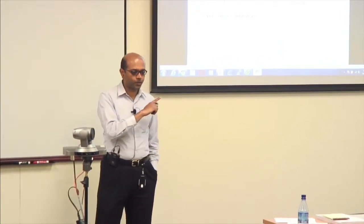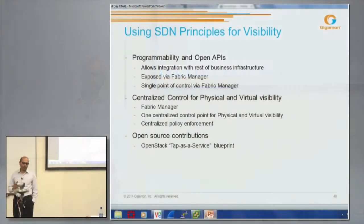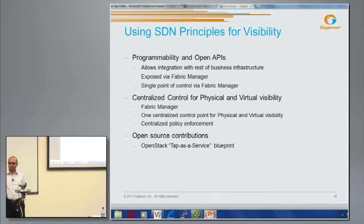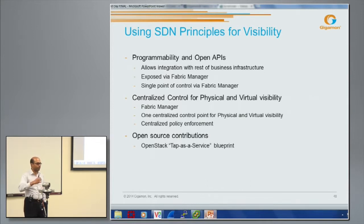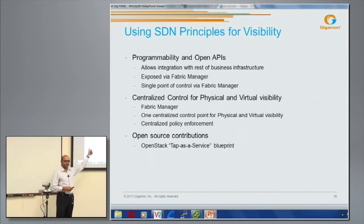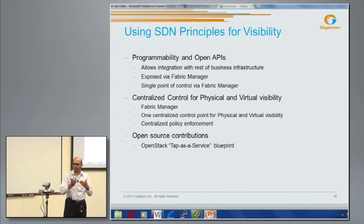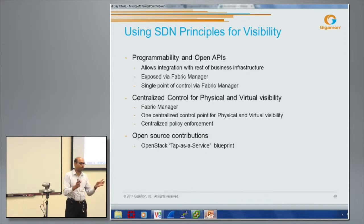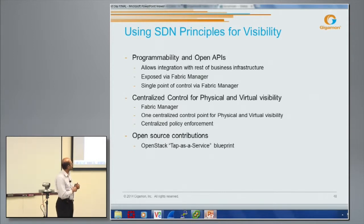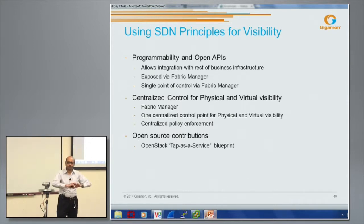The last part is using SDN principles for visibility. There are three key things. Number one is programmability and open APIs — we have a prototype for APIs that allow the fabric manager to talk to external systems, typically the tools connecting to the visibility fabric. For example, you can change a flow map so that different data is delivered to tools based on conditions detected by those tools. Being exposed via the fabric manager means it is a single point of control for the entire visibility fabric.